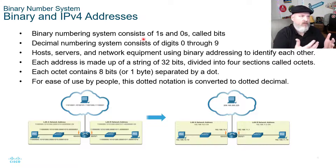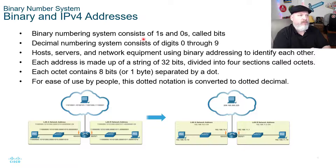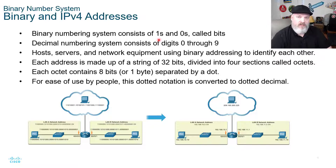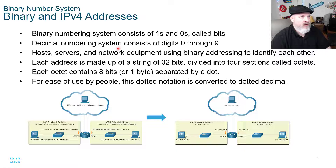We start with one and go up to ten, but we use ten digits and it's called a decimal system. In networking and in the computer world, we work with binary, and it consists of ones and zeros — so two places. The decimal numbering system has zero through nine. Host servers and network equipment use binary addressing to identify each other, ones and zeros.